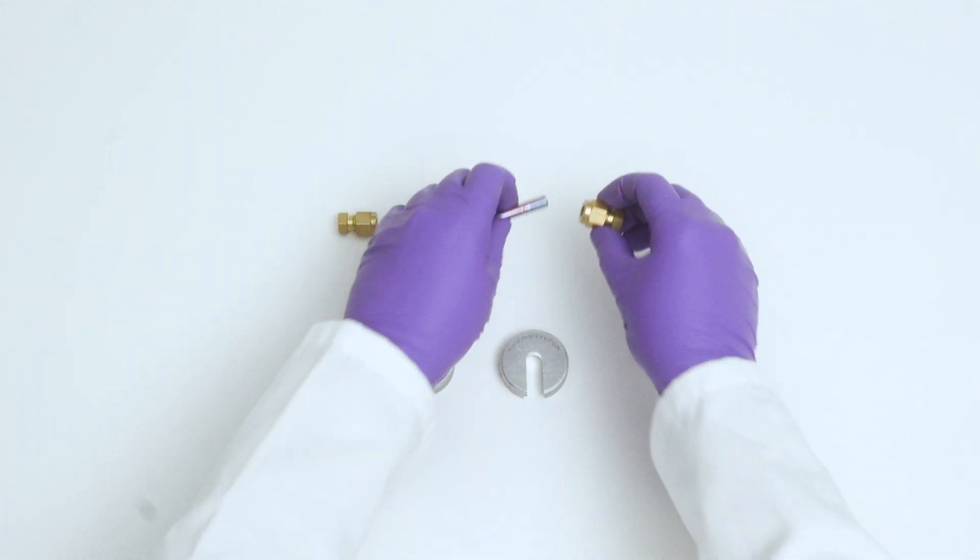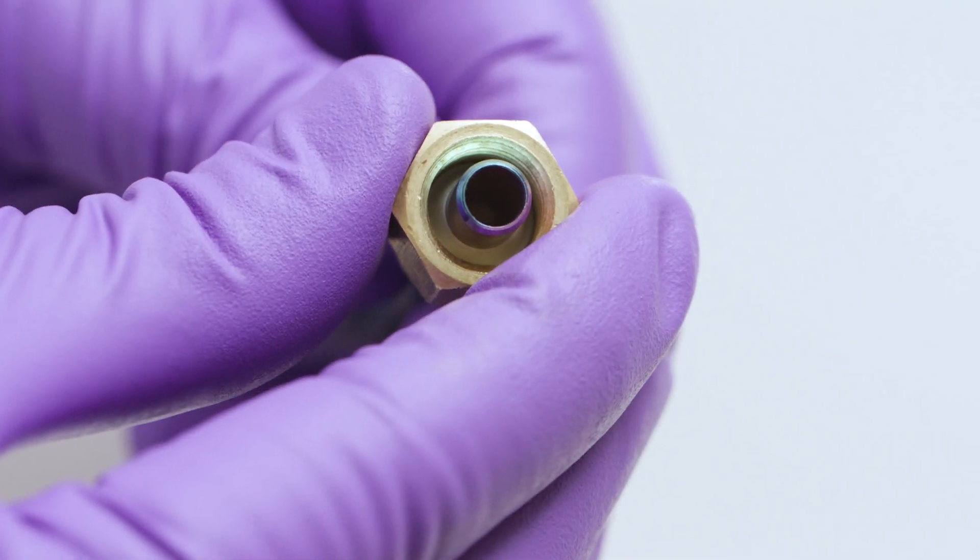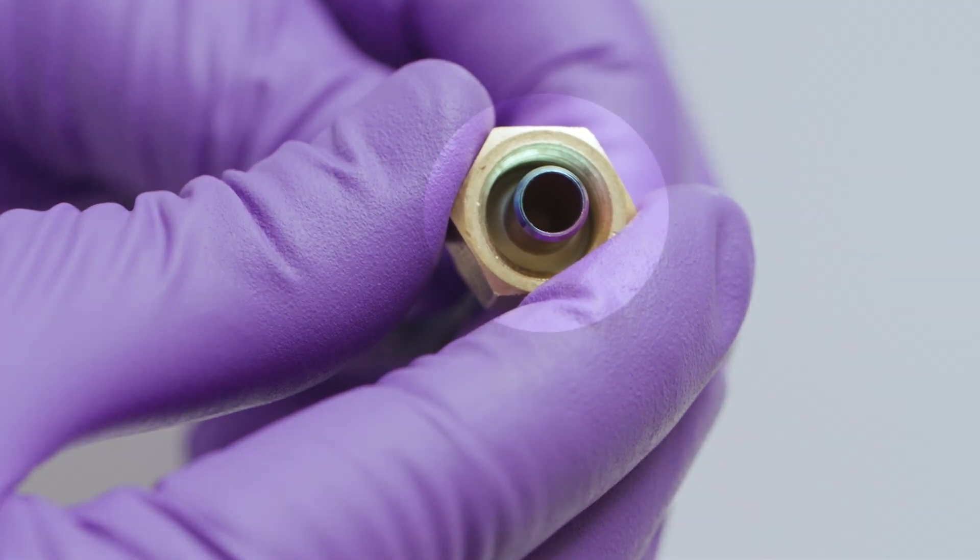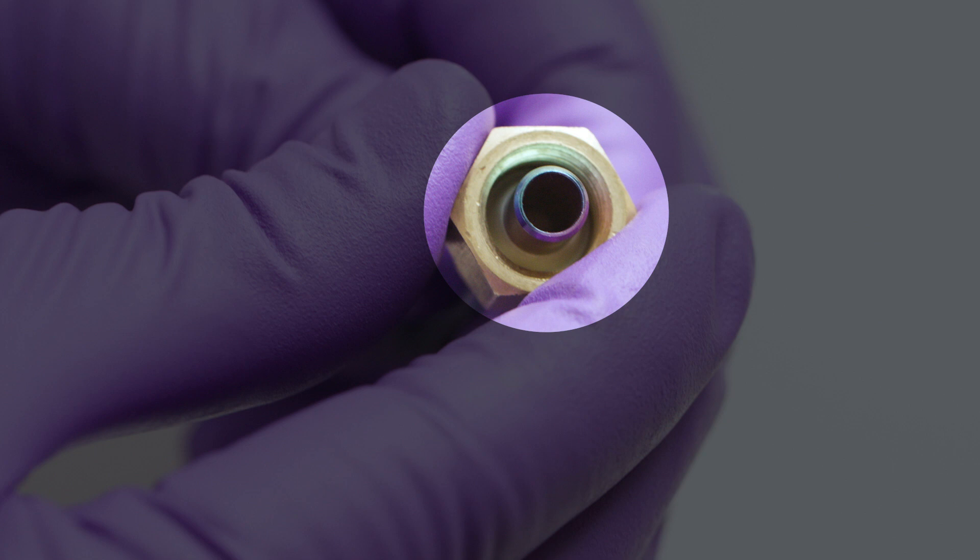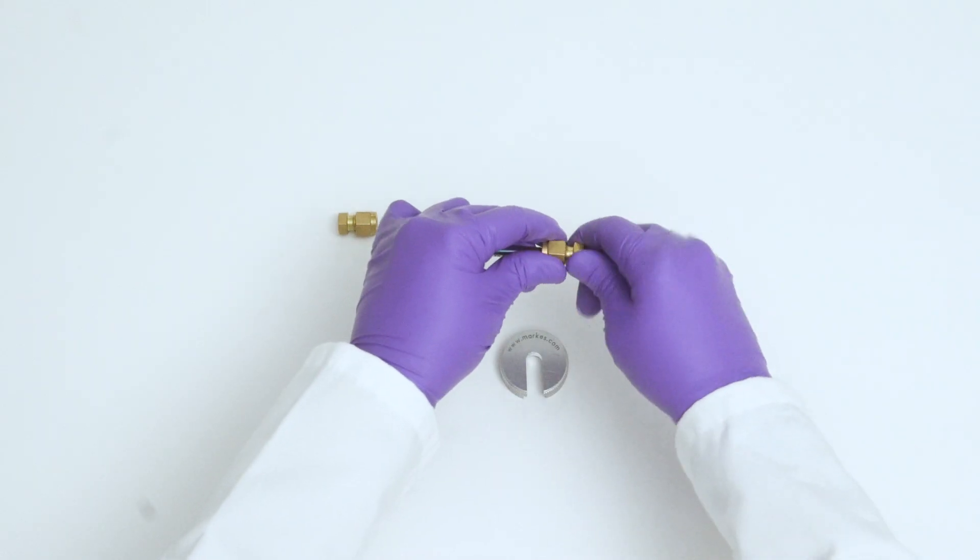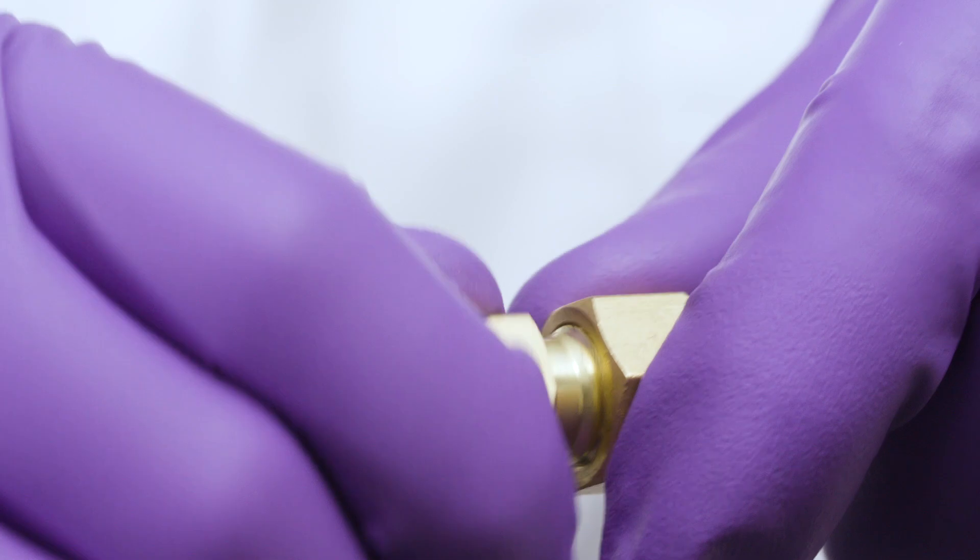Before using the cap lock tool, fit the long-term storage caps onto the tube, ensuring the tube passes through the PTFE ferrules within them. You should finger tighten the caps as securely as possible.